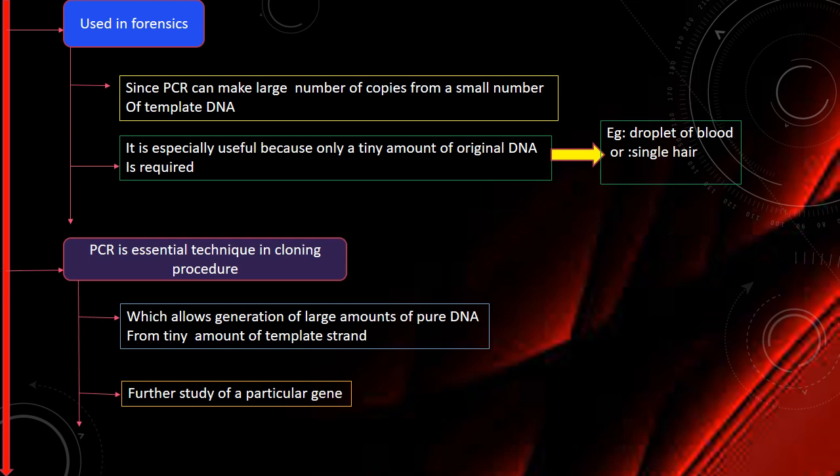PCR is used in forensics. Since PCR can make a large number of copies from a small number of template DNA, it is especially useful because only a tiny amount of original DNA is required, for example, a droplet of blood or single hair.